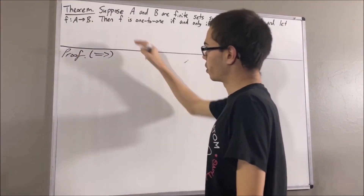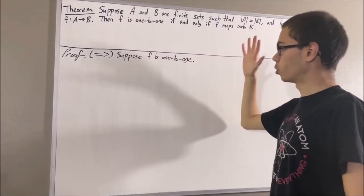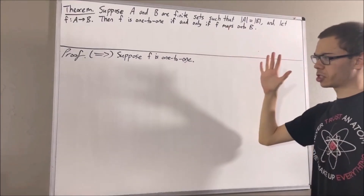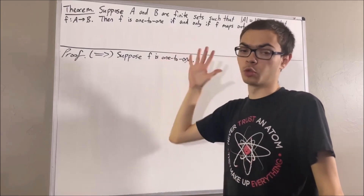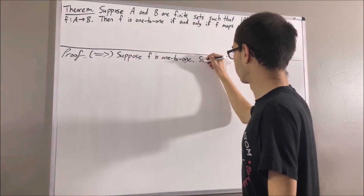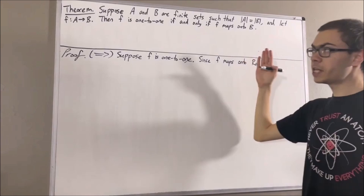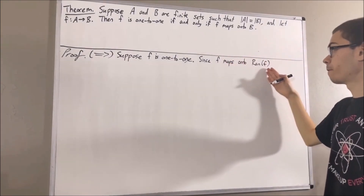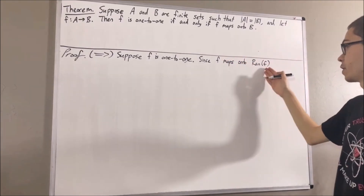To do that, let's suppose F is one-to-one. The whole goal is to prove F maps onto B. To start out, we know that every function maps onto its range. So F must map onto the range of F. What this means is, if we think of F as a function from A to the range of F, then F is a bijection between A and the range of F.